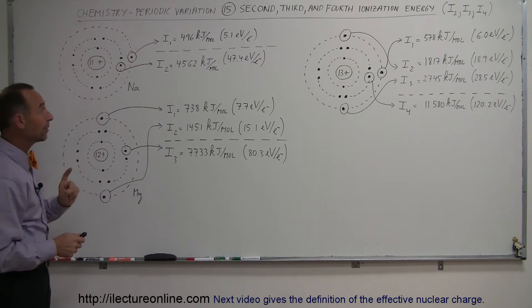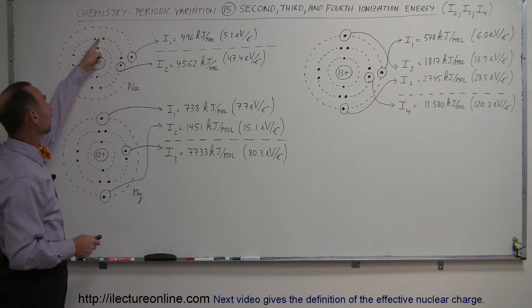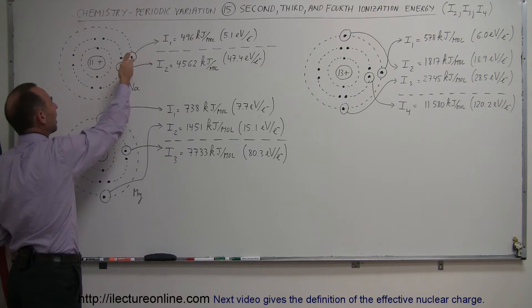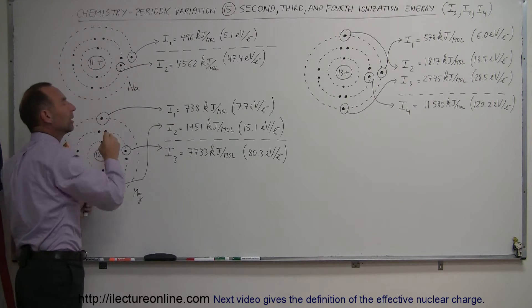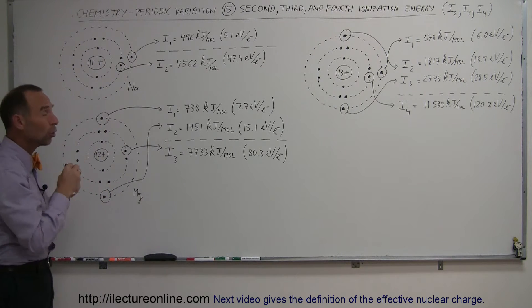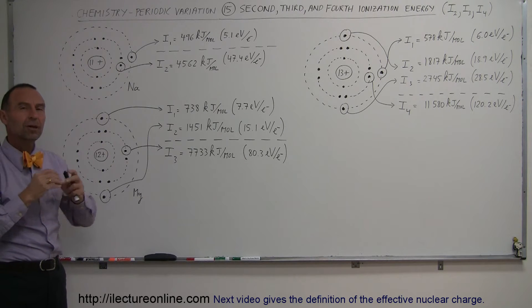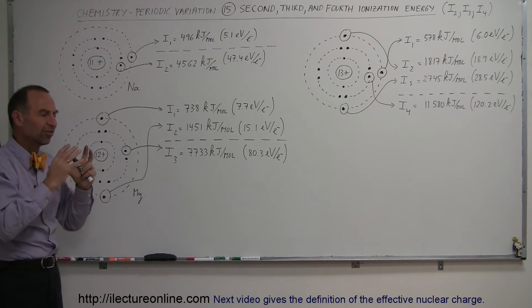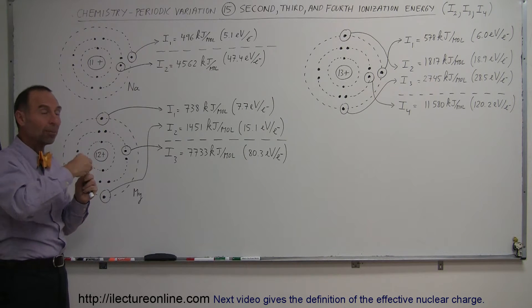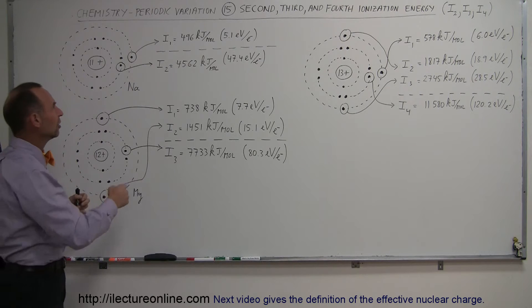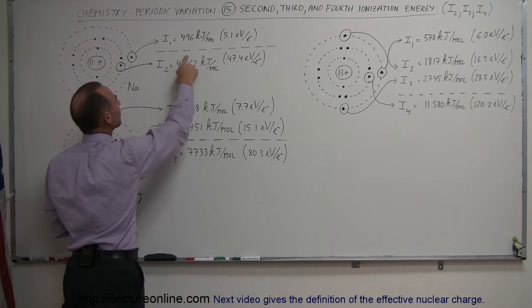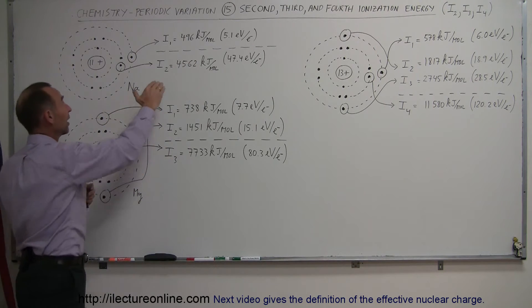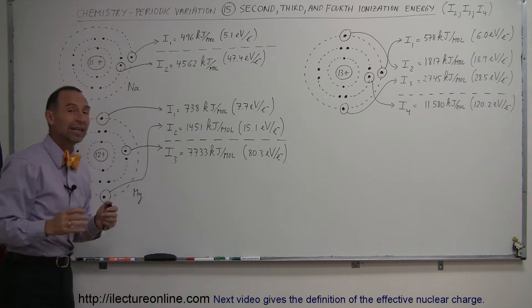To take the second electron away, since that one is nestled into the second energy level which is completely filled, taking one of those electrons away requires an enormous amount of energy. Whenever that last shell is filled with electrons, that is a very stable energy state, and to upset that by removing an electron requires a lot of energy. Notice the energy required is almost 10 times the amount needed to take out the first electron — a very big difference between the first and second ionization energies of sodium.